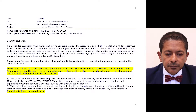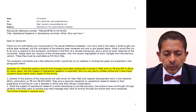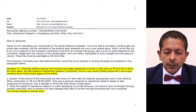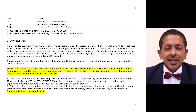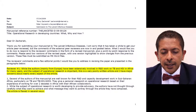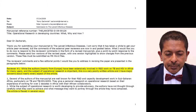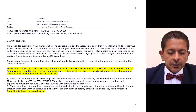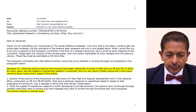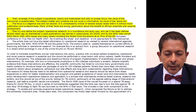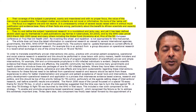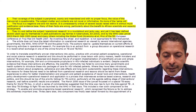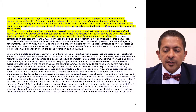Reviewer one, page one: 'While the authors, mainly from Europe, have been extensively involved in R&D work on TB and HIV in Africa for many years, and the subject of operational research is important, this is a very poorly written article and I have major concerns about nearly every aspect of the article.' Further down at the end of page one: 'This article is flawed in several ways.' Moving to page two: 'The coverage of the subject is peripheral, scanty and meandered, with no proper focus. The value of the manuscript is questionable. The subject matter and contents are not novel or informative — it's more of the same old.'